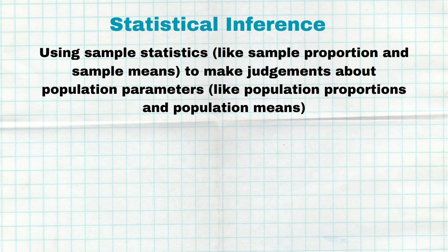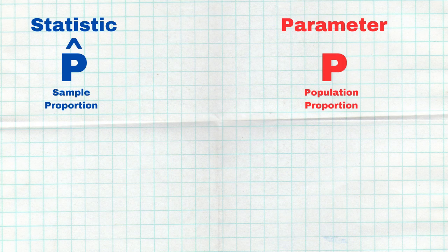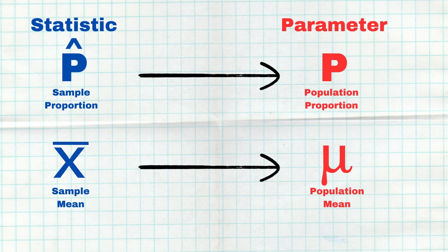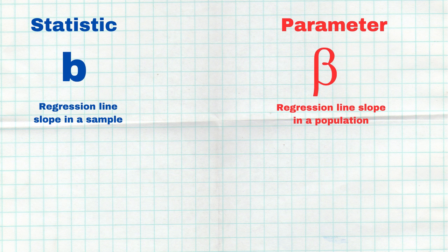So what is inference? Inference is using sample statistics to make a judgment about a population parameter. The most famous sample statistics we've learned about are p-hat, the proportion from a sample, which we use to make a judgment about p, the population proportion. We could do the same with x-bar, the mean of a sample, to make a judgment about mu, the population mean. We could also do this with the slope of a regression line between two quantitative variables — we take the slope from a sample and make judgments about the population slope.